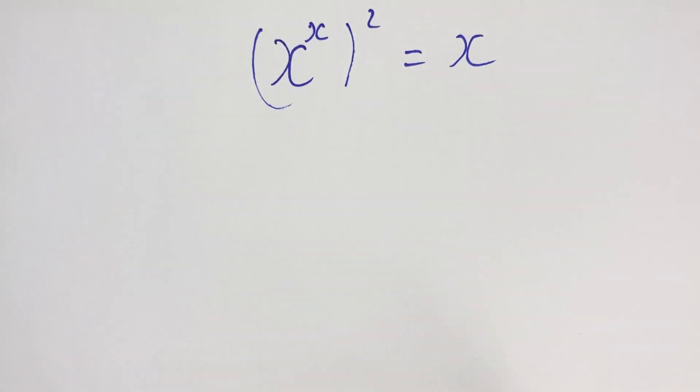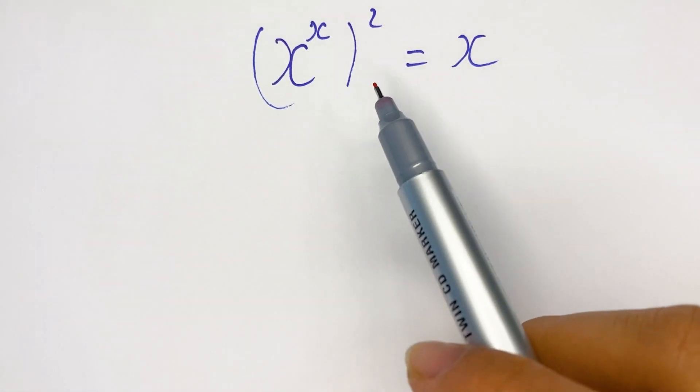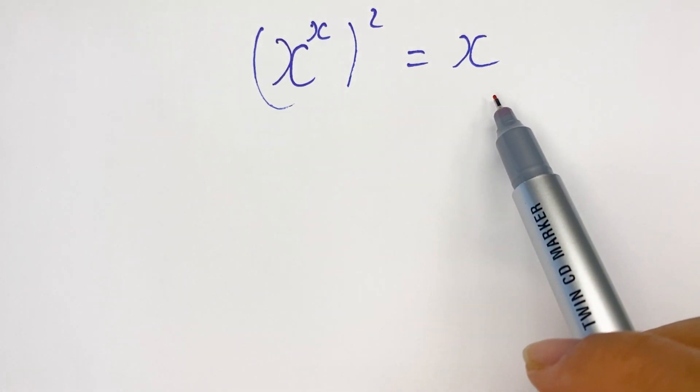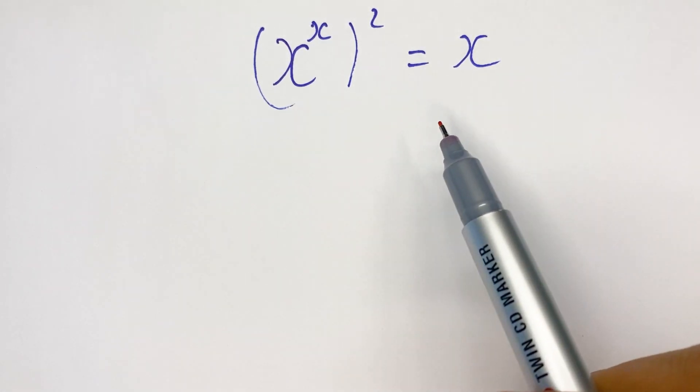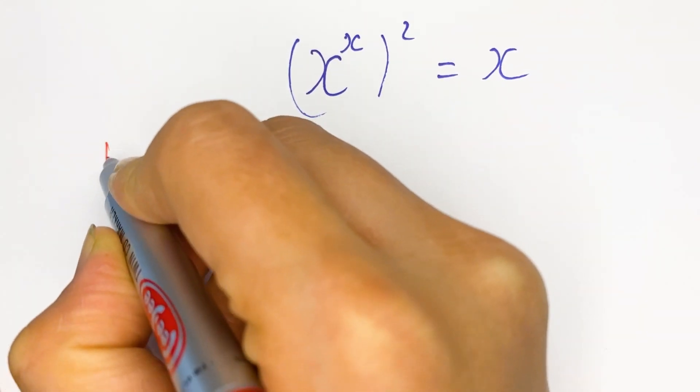Hello everyone, now we are going to solve this equation. You can see the given equation x^x bracket power 2 equals x. First, by observation we can find a solution to this equation.